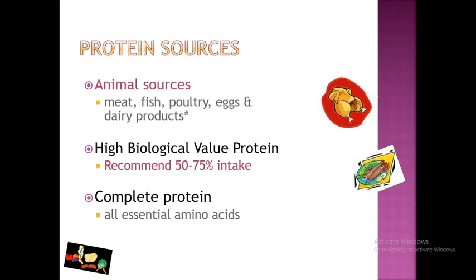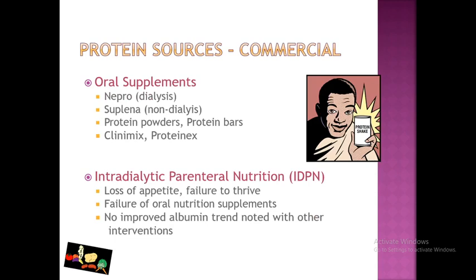There are 20 main amino acids. We also have commercial protein sources, such as oral supplements commonly called protein shakes. For dialysis patients there is Nepro, for non-dialysis patients there is Suplena, as well as protein powders, bars, and protein eggs. Intradialytic parenteral nutrition, or IDPN, is used when there is loss of appetite, failure to thrive, failure of oral nutrition supplements, or no improved albumin trend noted with other interventions.